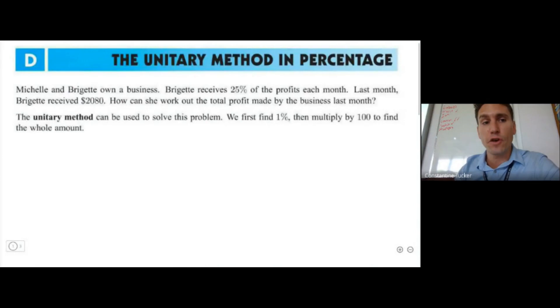Okay, so this is paragraph 5D: the unitary method in percentage. Let's have a look at an example and try to understand what this method is all about. Michelle and Brisette own a business. Brisette receives 25% of the profits each month. Last month she received $2080. How can she work out the total profit made by the business last month?